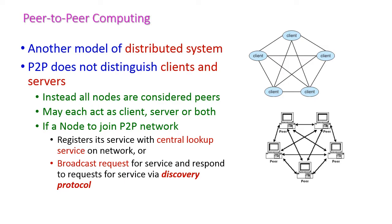The next type is peer-to-peer computing, which is another form of distributed computing. Here, there is no separate client and no separate server — all nodes are treated equally in the network. Hence the nodes are considered peers, and each peer can act as either a client, a server, or both.